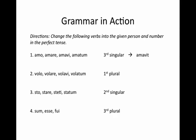Number two: wola, wolare, wolawi, wolatam in the first person plural. Once again, we're talking about the perfect tense, so we're going to go to the third principal part, wolawi, and drop our 'i,' and add our ending imus. So here we have wolawimus — 'we have flown.'